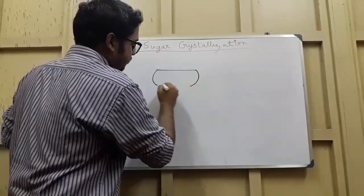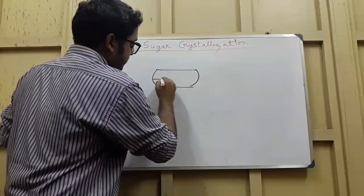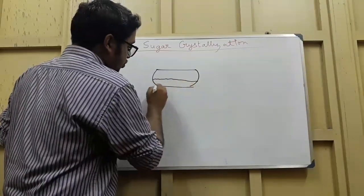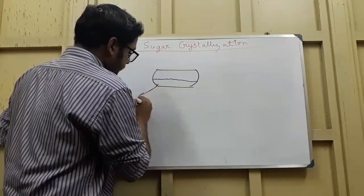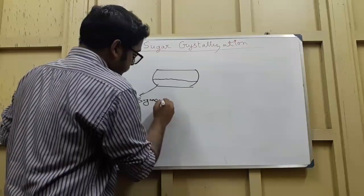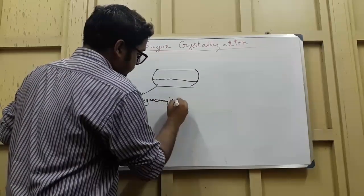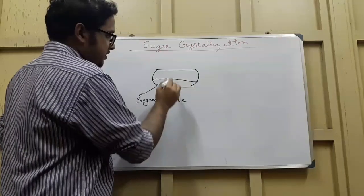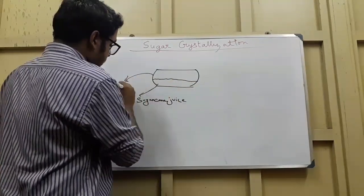So first let us understand it with an example of the crystallization process. Supposedly this is the sugarcane juice initially, sugarcane juice that has been extracted and sent to a crystallizer.